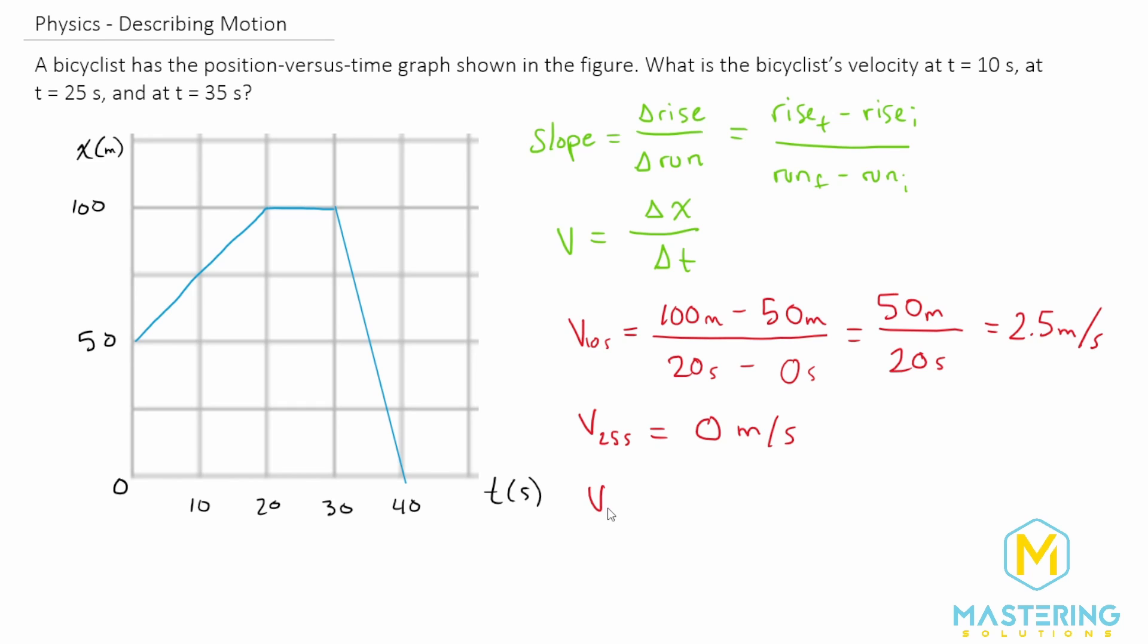And then lastly we have 35 seconds, and here this section will give us the slope for velocity at 35. The final position is zero meters, initially it was at 100, and that will all be divided by 40 seconds for the final and 30 seconds for the initial. So that gives us negative 100 meters divided by 10 seconds.